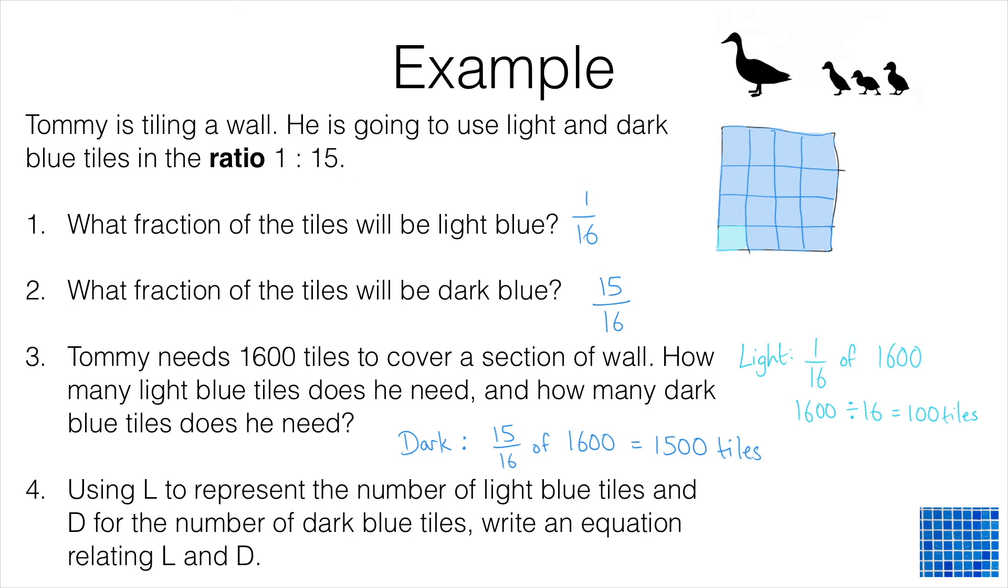For example, if Tommy is just going to put 16 tiles up, he's going to have 15 dark tiles and just one light tile. There are 15 times as many dark tiles as light tiles in this diagram.